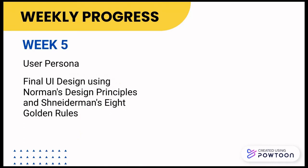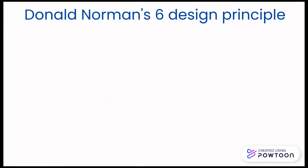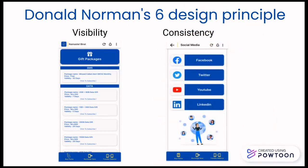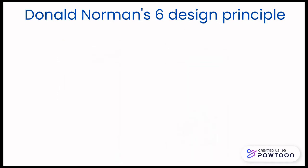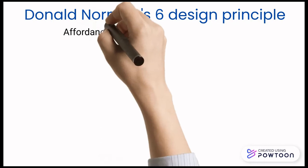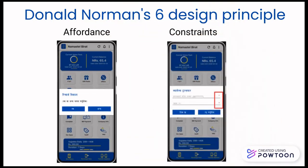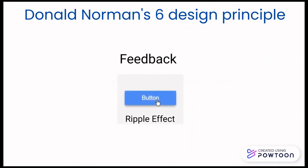Let's see how these design principles were incorporated in our designs. For visibility, we changed gradient color into solid color and added box shadow. To keep consistency, we maintained the color and font throughout the app and also tried to have a similar item listing pattern. We used a localization feature to add to the accessibility of the app. For the constraint feature, we used an asterisk for required fields.